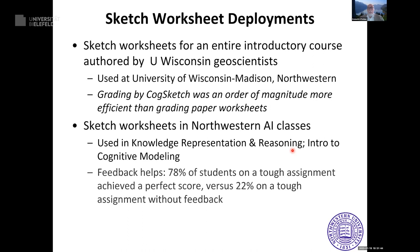We've used sketch worksheets in Northwestern AI classes as well as geoscience, in knowledge representation and reasoning. On a tough assignment with feedback, 78% of students got a perfect score — that never happens on tough assignments. On a similarly tough assignment without feedback, 22% got a perfect score. Feedback can actually help. More instructors are adopting it, and it's available through Amazon Web Services — contact us for setup details.